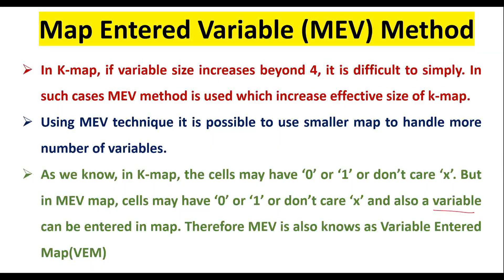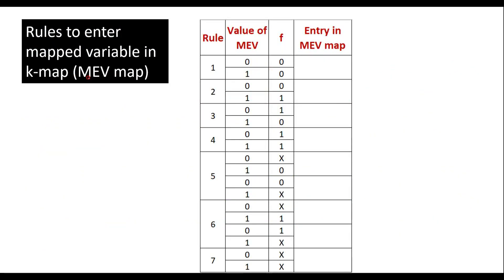To simplify a given Boolean expression using MEV method, we need to follow some rules. Rules to enter the mapped variable in KMAP: in an MEV map, we enter one variable along with 0, 1, or don't care. Rule 1: if the value of MEV is 0 and the function value is 0, and if the value of MEV is 1 but the function is also 0, in both cases we enter 0 in the MEV map.